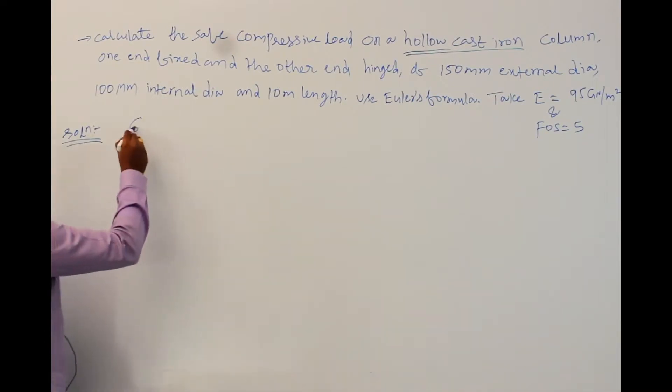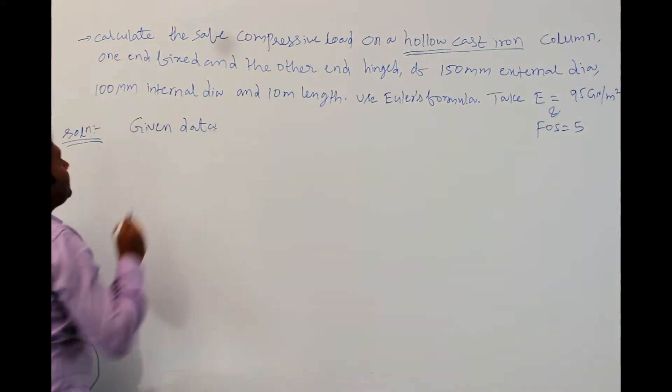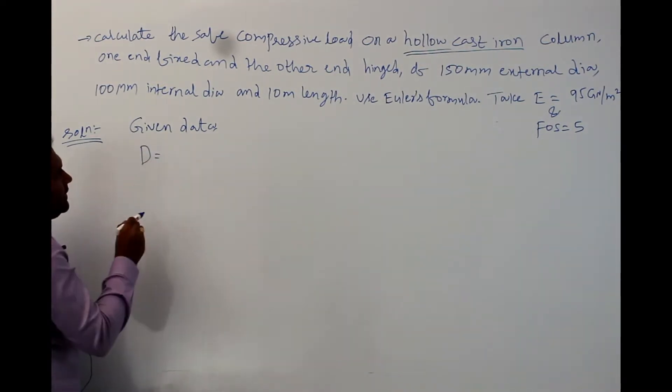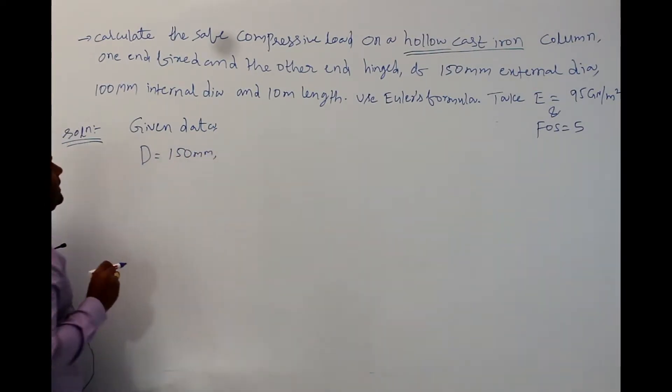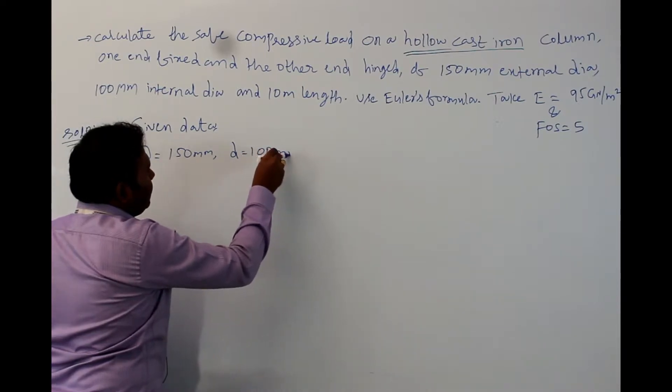First we will write down the given data. It is a hollow cast iron column. External diameter is given as well as internal diameter is given. External diameter capital D, I am taking it as 150 mm and internal diameter small d, I am taking it as 100 mm.